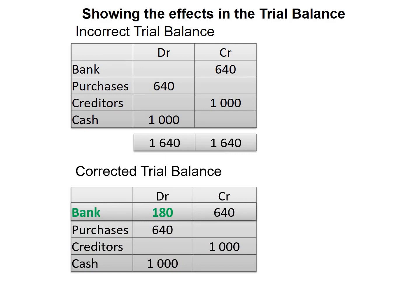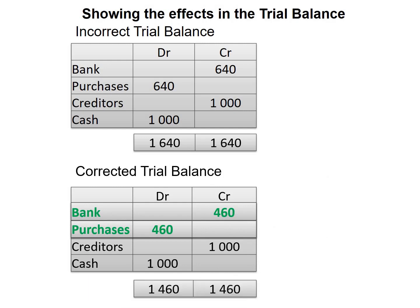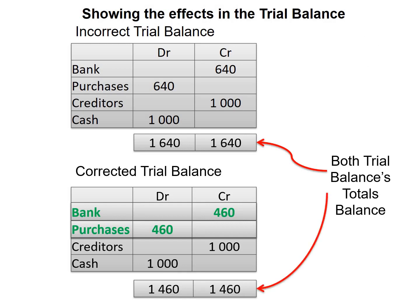Let's have a look at our corrected trial balance. We will debit bank with $180, which gives us the correct total for bank of $460. Then we credit purchases with $180 to obtain a debit balance for purchases of $460. After correcting the error, our trial balance still balances. So both the incorrect and corrected trial balances balance. Let's move on to the next error.